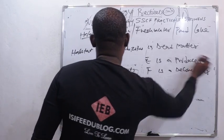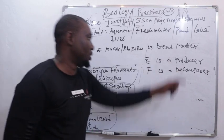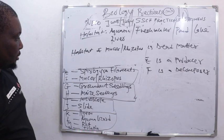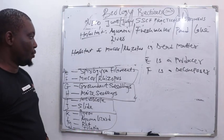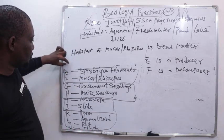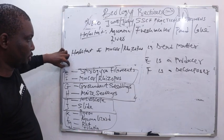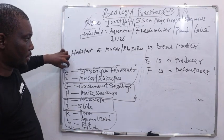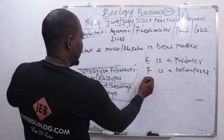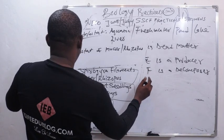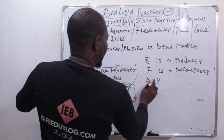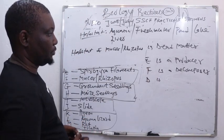E is a producer and F is a decomposer. Now, somewhere here I have a crawfish. Crawfish is a consumer, so sometimes if I add the remaining specimen D, which is crawfish, I can arrange these in a food chain.